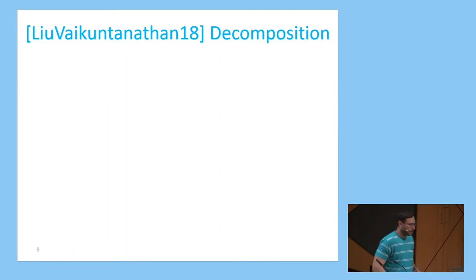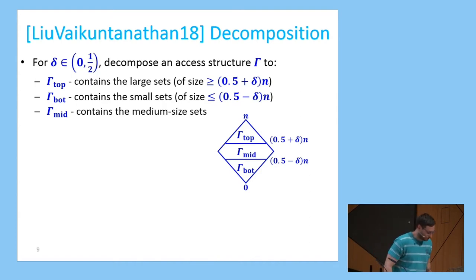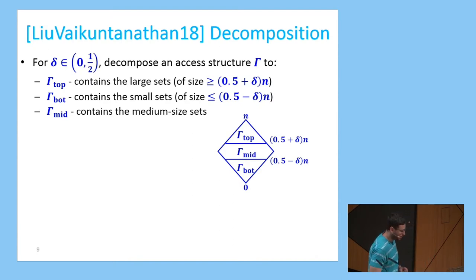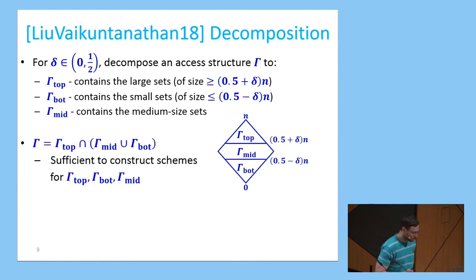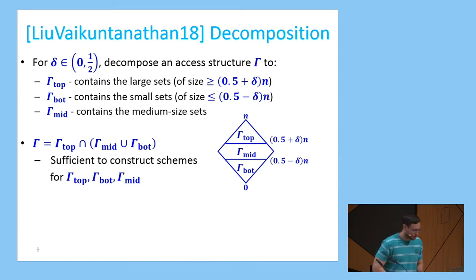Next I will explain some of the ideas of our schemes. For a parameter delta, we decompose any access structure gamma into three access structures: gamma_top, containing large sets of size at least (1/2 + delta)N; gamma_bot, containing small sets of size at most (1/2 - delta)N; and gamma_mid, containing medium-sized sets between those two values. We show that gamma equals gamma_top intersected with gamma_mid, union gamma_bot. To construct a secret sharing scheme for gamma, it suffices to construct schemes for gamma_top, gamma_bot, and gamma_mid, by the closure properties of secret sharing schemes.